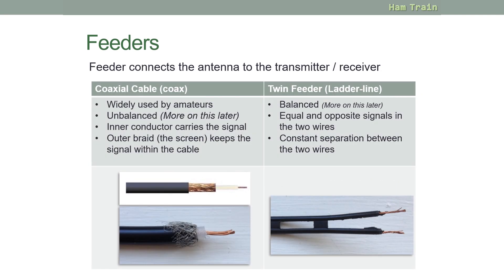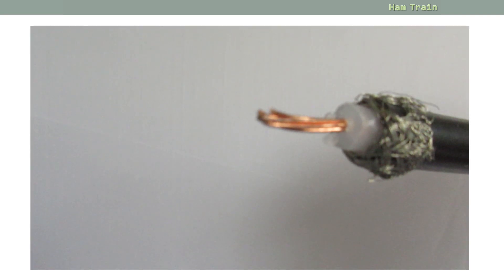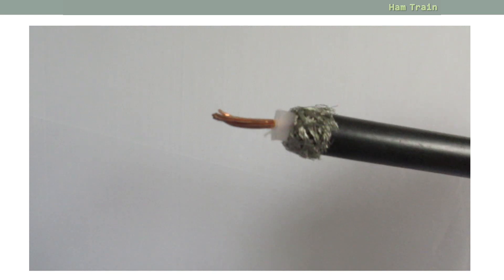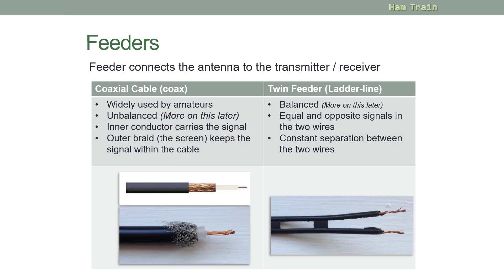There are two types of feeder that we need to be concerned with at foundation. Coax, which is on the left, and twin feeder or ladder line, which is on the right. Looking at coax first of all, this is the most widely used feeder that there is, and it's unbalanced. More on this later in this module. The inner connector, which I'm circling here on the screen, is the part that carries the signal. And the outer braid, again on the screen here, is the bit that keeps the signal inside the cable and also helps to stop electrical interference coming into that signal.